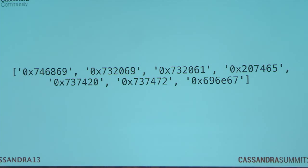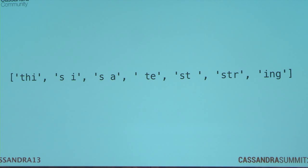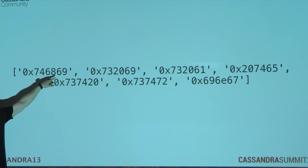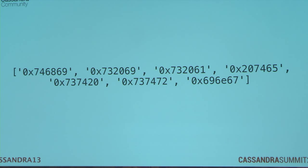Then I encode the trigrams as integers. If you happen to memorize the ASCII byte chart, you'll see that for my first trigram T-H-I, I've taken the Unicode byte values and stored them into a 128-bit int. The reason I'm using 128-bit ints is that Unicode characters have a maximum length of four bytes, which means I can stuff four of them into a 128-bit integer but not a 64-bit one. We're a global company, so we want to support full Unicode.